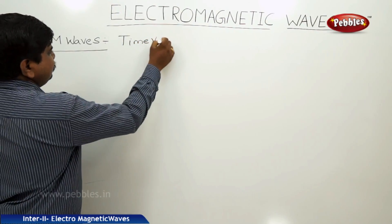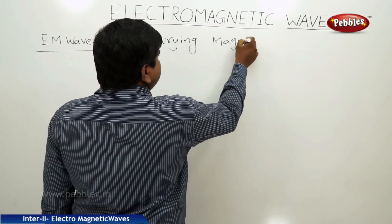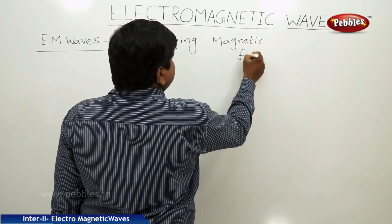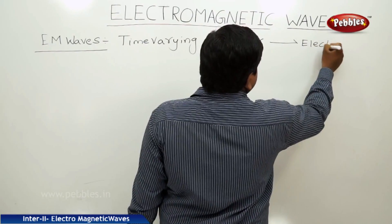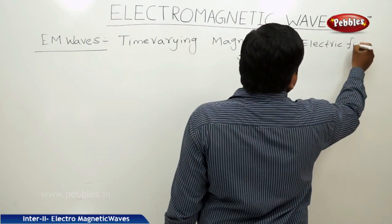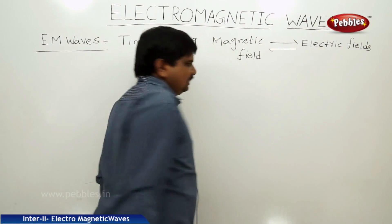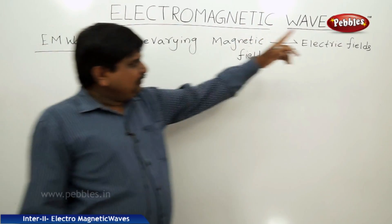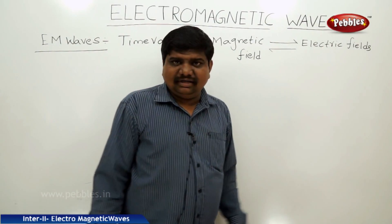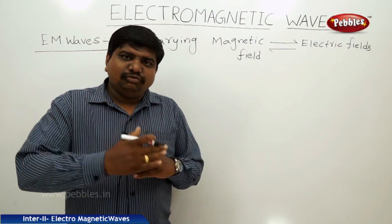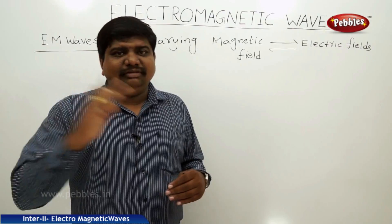Time-varying magnetic fields produce electric fields, and time-varying electric fields produce magnetic fields. That means within a given time, if the electric field is changing, it produces the magnetic field. If the magnetic field is changing, it produces the electric field. These two will try to dominate each other with respect to variation in time.